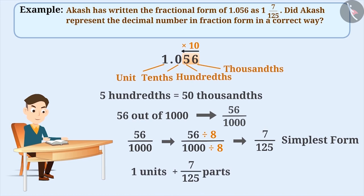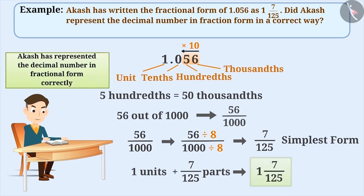Now, 1 unit and 7 by 125 parts together can be written as 1 and 7 by 125. Therefore, Akash has represented the decimal number in fractional form correctly.